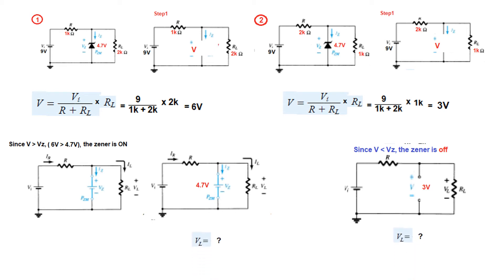Now the question is how much is VL. In this case VL is the same as this voltage because they are in parallel. So VL is 4.7 volt. Whereas in this case VL is in parallel with this so VL will be 3 volt. So this will have to be clear as well.